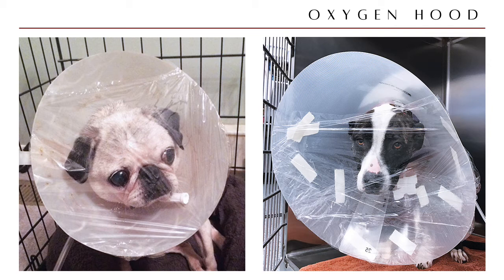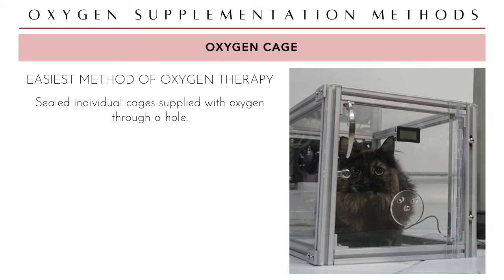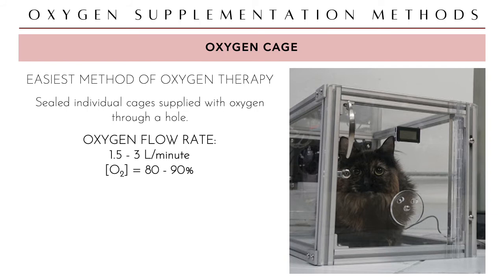The oxygen cage is the best and easiest method of oxygen supplementation. These are sealed individual cages supplied with oxygen through a connected tube, achieving 80 to 90 percent O2 concentration. A major advantage is that no animal handling is required, which is critical for severely respiratory-distressed patients — especially cats with cardiac problems, respiratory problems, or pleural effusions.